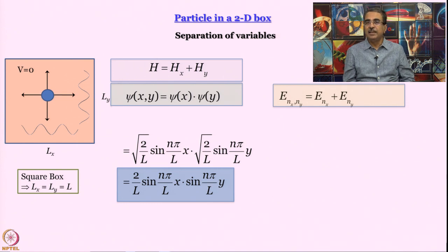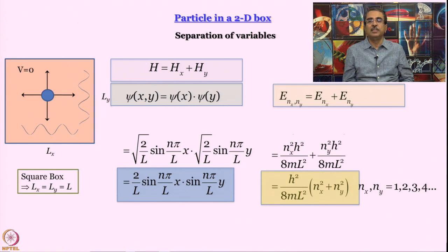What about energy? Kinetic energy arrives p square by 2m and p is essentially a vector sum of px and py. So naturally energy is also going to be sum of Ex and Ey. This is what it is going to be: nx square h square by 8mL square plus ny square h square by 8mL square. Since the length is the same along x and y direction equal to L, we can take it out. We get h square by 8mL square multiplied by nx square plus ny square, where nx and ny are 1, 2, 3, 4, so on and so forth, independent of each other.